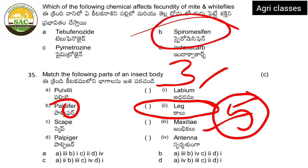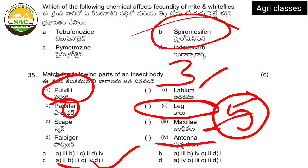Continuing the match: scape is the first segment of the antenna — antenna has scape and pedicel. So C=antenna (scape). Palpifer is related to labial, so D=labial. This matching question on insect mouth part terminology is straightforward once the diagram is understood.